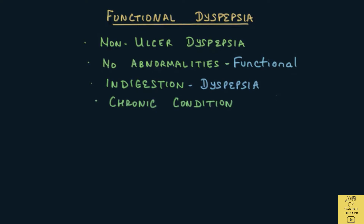Functional dyspepsia is a chronic condition that can go on for years. It is estimated that about 10-20% of the population suffers from this condition. Functional dyspepsia does not lead to other serious medical conditions. It does not affect life expectancy, and patients usually learn how to live with it, and some improve with time.